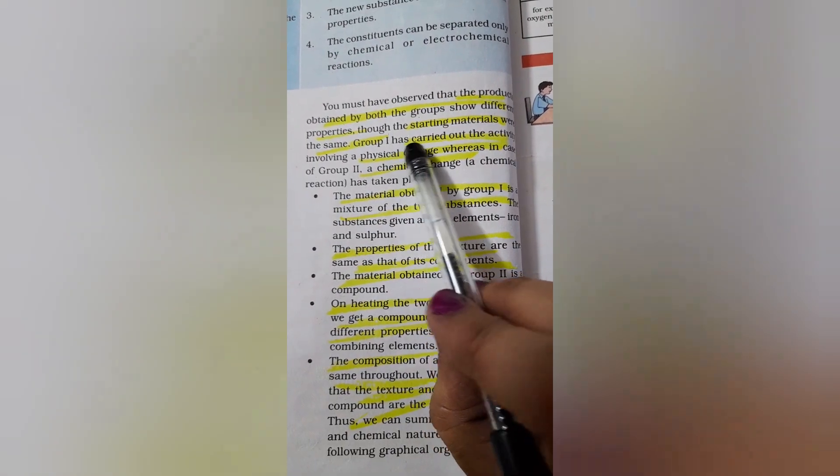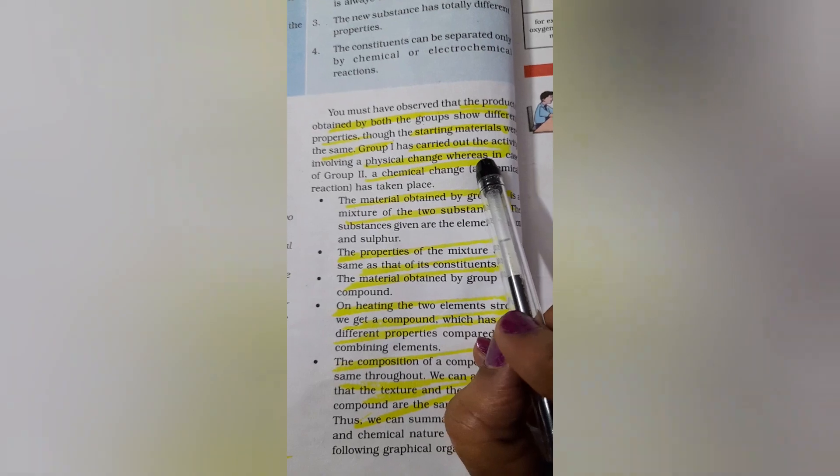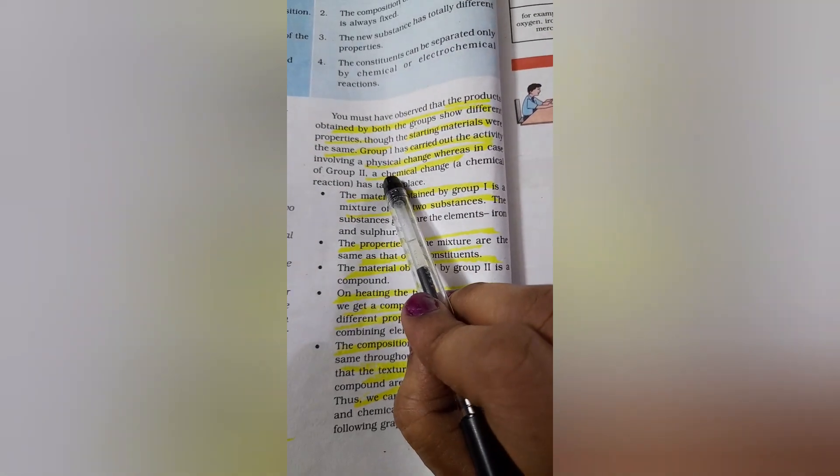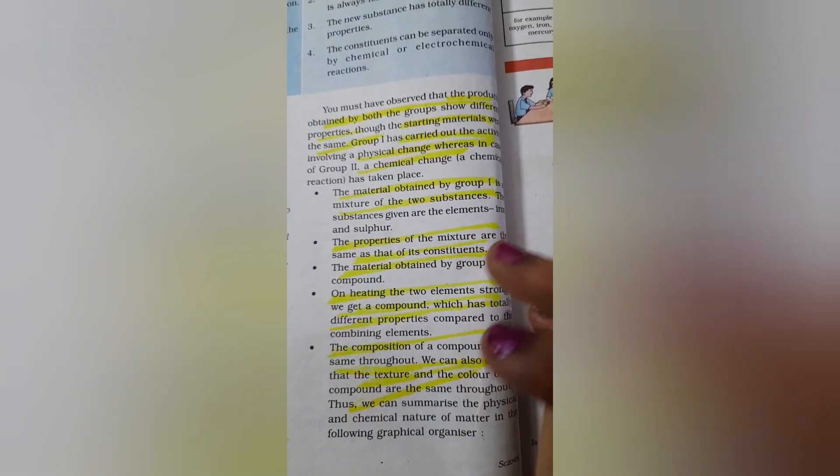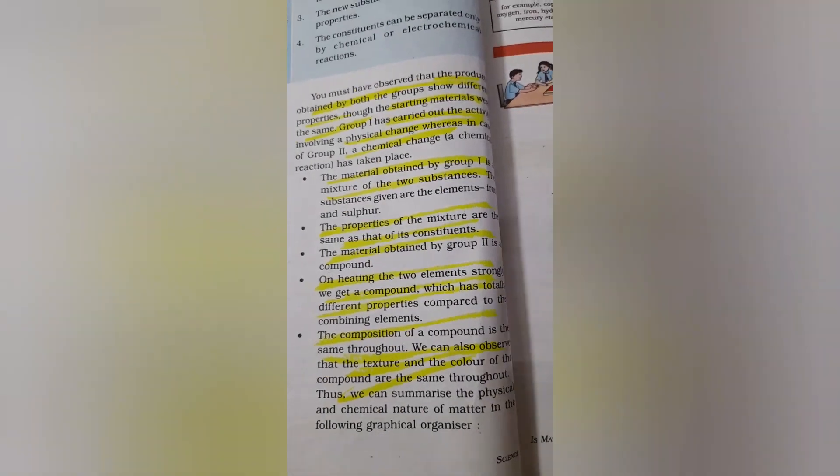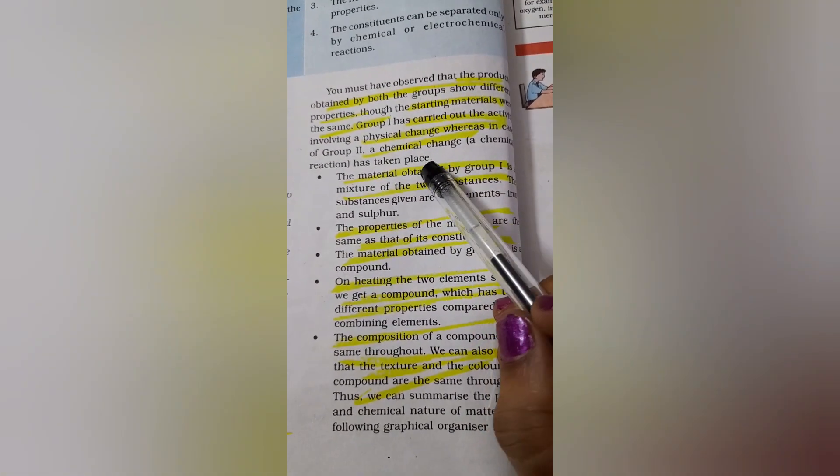The products obtained by both the groups show different properties. Starting materials are the same anyway. Group 1 has carried out the activity involving a physical change. First case it is physical change because even when you crush iron filings into smaller pieces, each of the piece will still possess the same property of the parent. So that is a physical change.